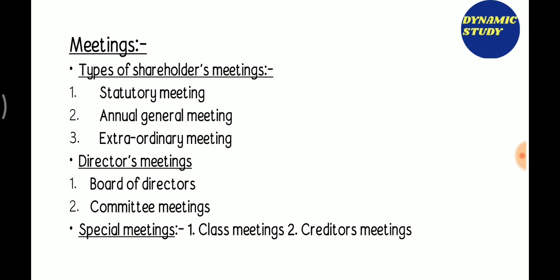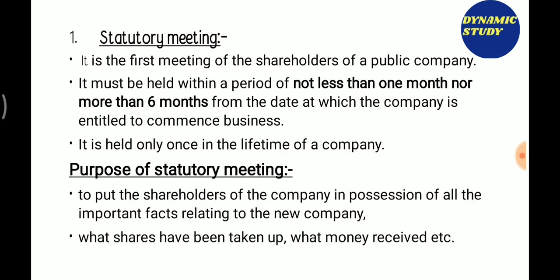There are also Special Meetings, which are Class Meetings and Creditors Meetings. Now let's start the Statutory Meeting. In simple terms, a Statutory Meeting is a meeting that is held only one time. A public company conducts it; no private company conducts it — whether it is limited by shares, limited by guarantee, or any other form — it is not a statutory meeting.